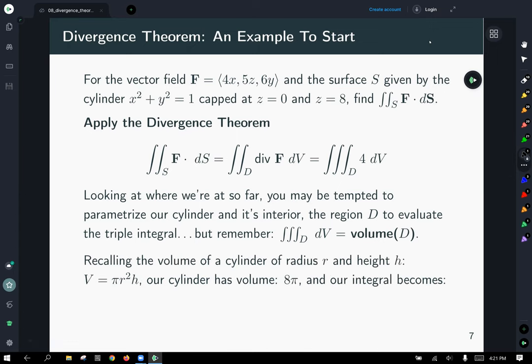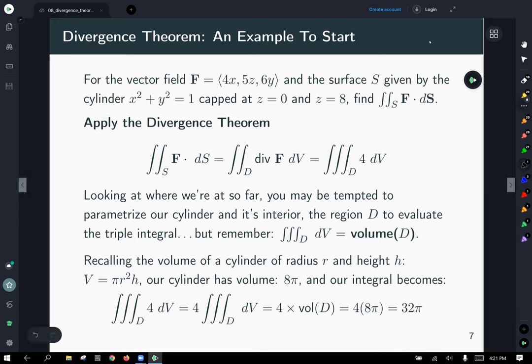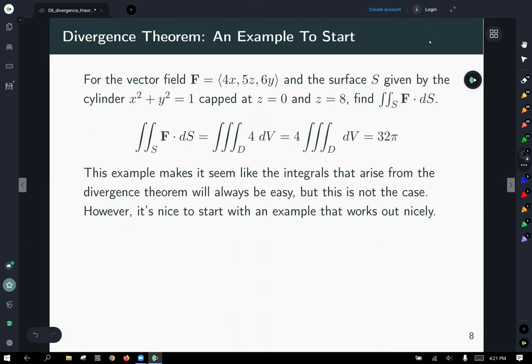And we know that the volume of a cylinder is something we can just calculate directly without having to do the integral. And so we know that the volume of our cylinder, since it's of height 8, and the area of the base is pi r squared, and it's the unit circle as base, so it's 8 pi. With this in mind, it takes our integral and turns it into a volume calculation. Pop the 4 out in front of the triple integral, then sure enough, this whole expression is equal to that, which is that, so we end up with 32 pi. Now that, I think most of us will agree, was significantly easier than doing three surface integrals.